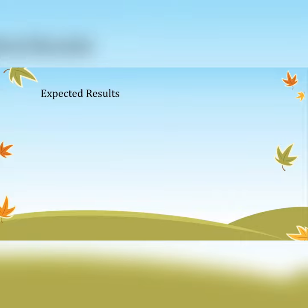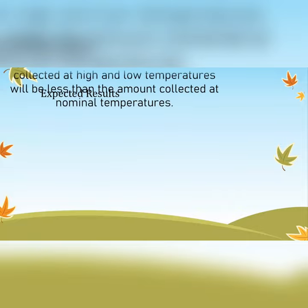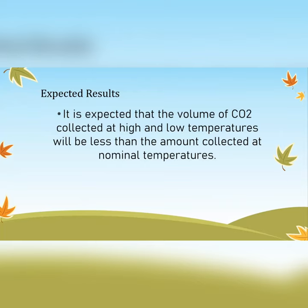For expected results — remember, expected results are the observations you expect to see based on your hypothesis. We write 'it is expected' because it is not definite; something else could happen. It is expected that the volume of CO₂ collected at high and low temperatures will be less than the amount collected at nominal temperatures.